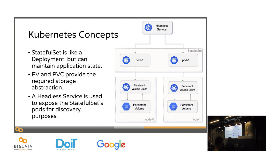All of those concepts tie together within a stateful set. A stateful set is just a sort of deployment — a container running within a pod with some replicas — but it allows you to use persistent volumes and persistent volume claims, and it allows you to give an identity to a pod. Even if one host goes down, that specific node will be brought up again on whatever host with exactly the same state it had, even if it's on another host.